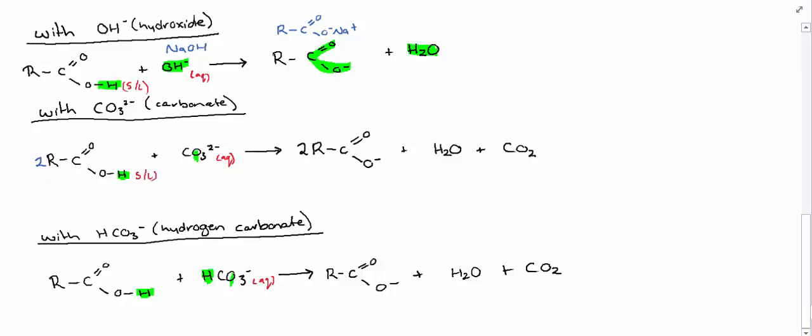Now, something I want to point out here is the state of all of the reactants and products. So our bases that we use are in aqueous solution. Our carboxylic acids will start off as either a solid or a liquid. But it's important to notice that our carboxylate salts will be aqueous, particularly if they're with sodium or potassium salts, they're soluble in water, which means we've got an aqueous solution. Obviously, our water is liquid and our carbon dioxide is going to be a gas.